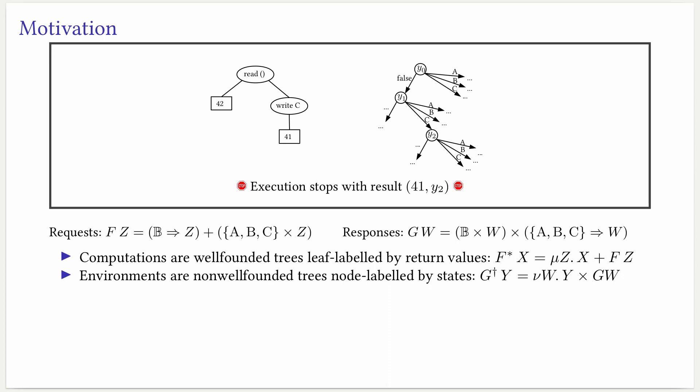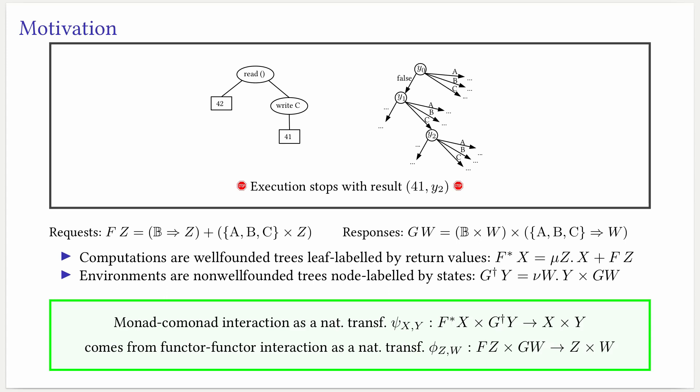On the other side, environments will be current states together with responses for each possible request. In the case of a read, we additionally have a bool which is the response, and in the case of write A, B, or C, we have a single new state. In the end, this kind of interaction between a computation and an environment will be reduced to some sort of natural transformation between these computations and environments, represented as monads and comonads. We can see that this kind of interaction actually comes from an interaction between requests and responses. This is what we will call functor-functor interaction laws.